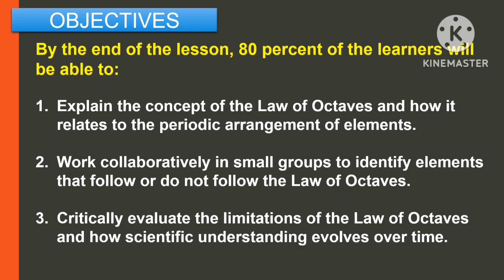For the objectives, by the end of the lesson, 80% of the learners will be able to: first, explain the concepts of the Law of Octaves and how it relates to the periodic arrangement of elements. Second, work collaboratively in small groups to identify elements that follow or do not follow the Law of Octaves. And third, critically evaluate the limitations of the Law of Octaves and how scientific understanding evolves over time.